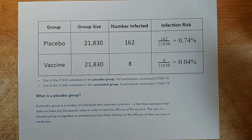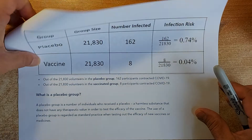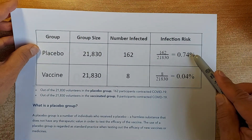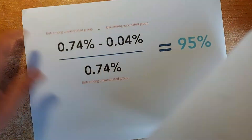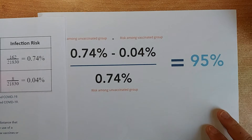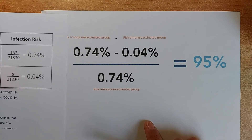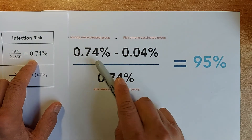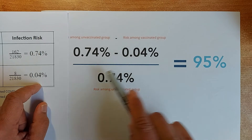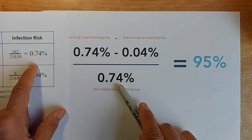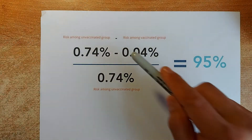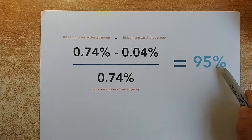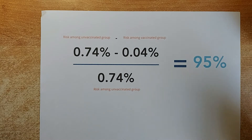Now let's calculate the efficacy rate. The efficacy rate is very simple. The placebo infection risk is 0.74% and the vaccinated group infection risk is 0.04%. To calculate the efficacy rate, we use this formula: the risk among the unvaccinated group, 0.74, minus the risk among the vaccinated group, 0.04, divided by the risk among the unvaccinated group, 0.74. So 0.74 minus 0.04 is 0.70, and 0.70 divided by 0.74 gives you 95%. That is how the pharmaceutical industry calculates the efficacy rate.